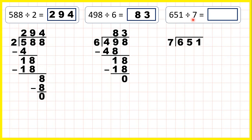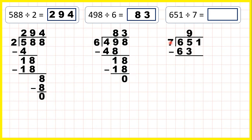Now 651 divided by 7. If we take the first digit, again, 6 is less than 7, so it makes sense to take the first two digits together and divide 65 by 7. So we want a number in the 7 times table which is closest to 65 but still less than 65. Now 63 is in the 7 times table, and because that's 9 times 7, we can write 9 in our answer line.